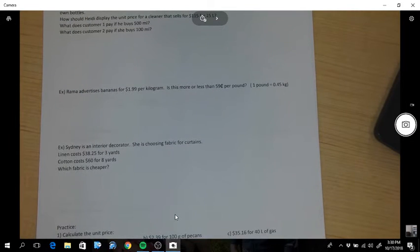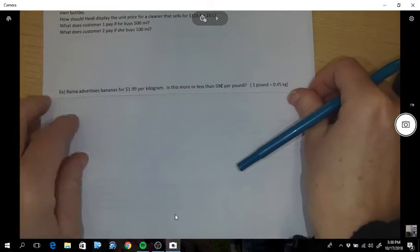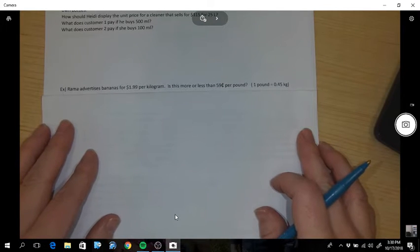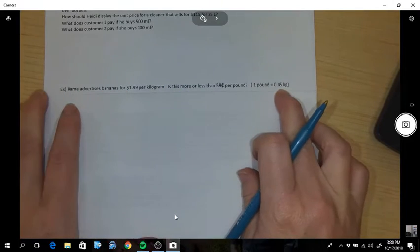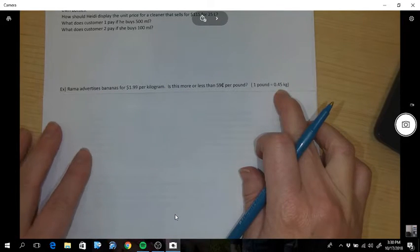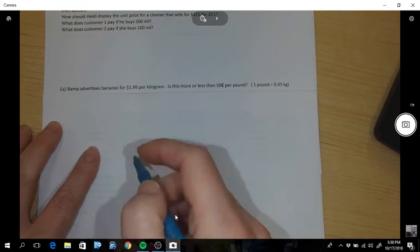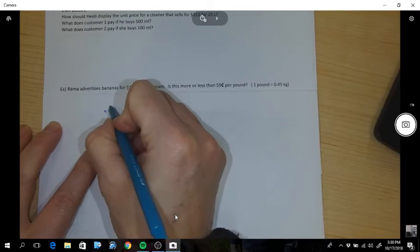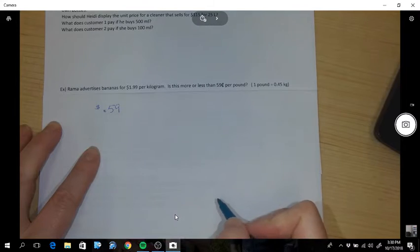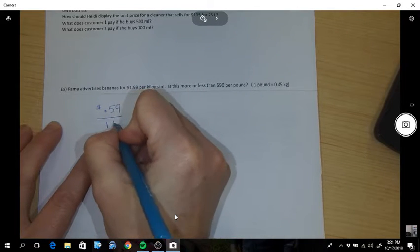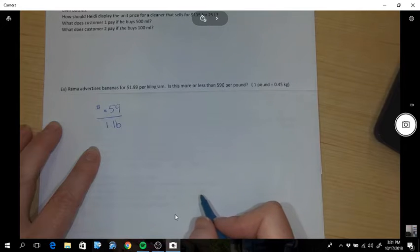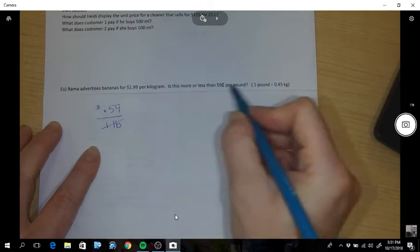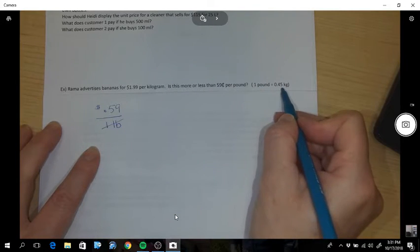Question two: Rama advertises bananas for $1.99 per kilogram. Is this more or less than 59 cents per pound? Okay, so we have 1 pound equals 0.45 kg. So we're going to take this 59 cents per 1 pound, and we're going to cross that out and replace 1 pound with 0.45 kg.